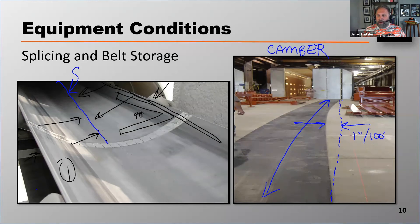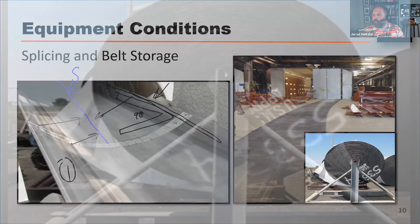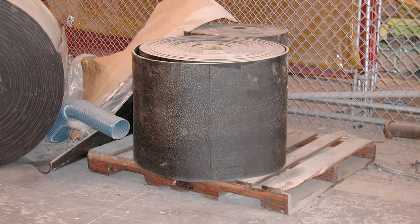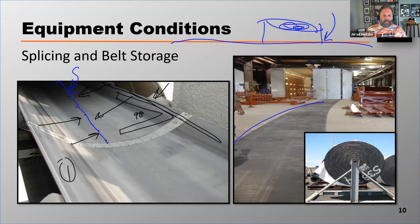That camber comes from storing the belt improperly. It's really important that you store belts on a rack like you see in the photo below. What we don't want to do is store a belt on the ground. If we store a belt on the ground, all the weight is on one side of the belt, damaging that carcass on that side. That creates an elongation to one side of the belt, causing the belt to mistrack.